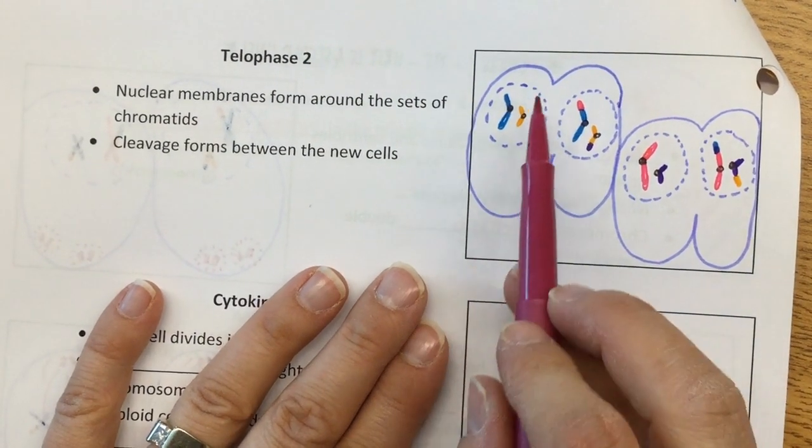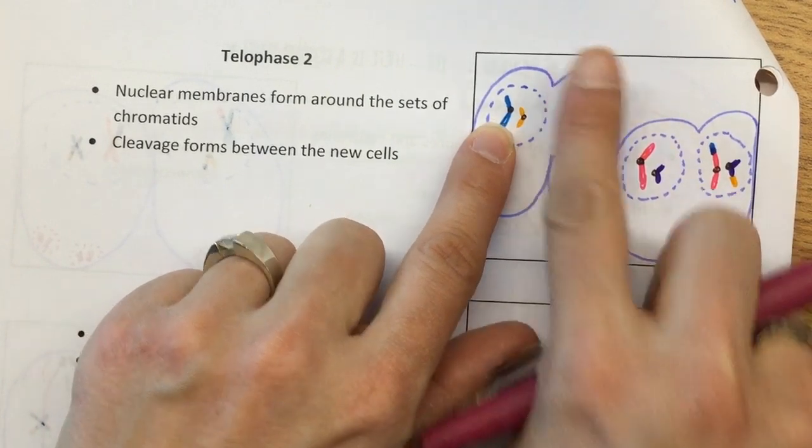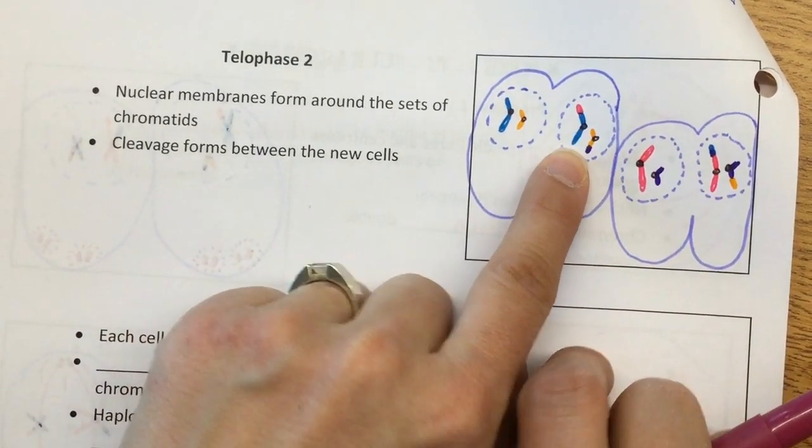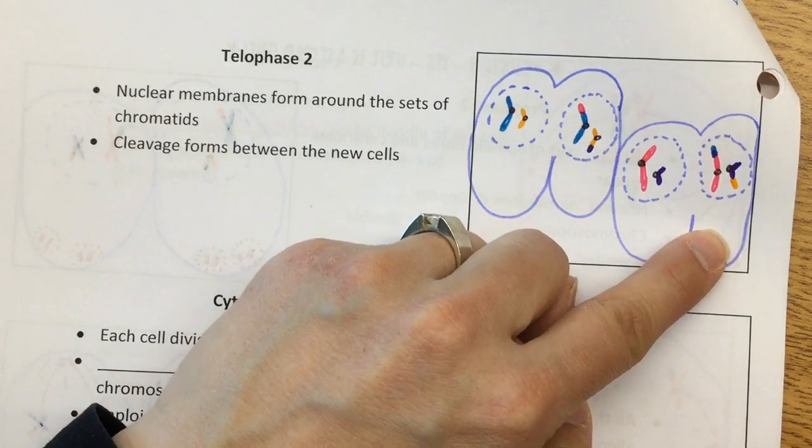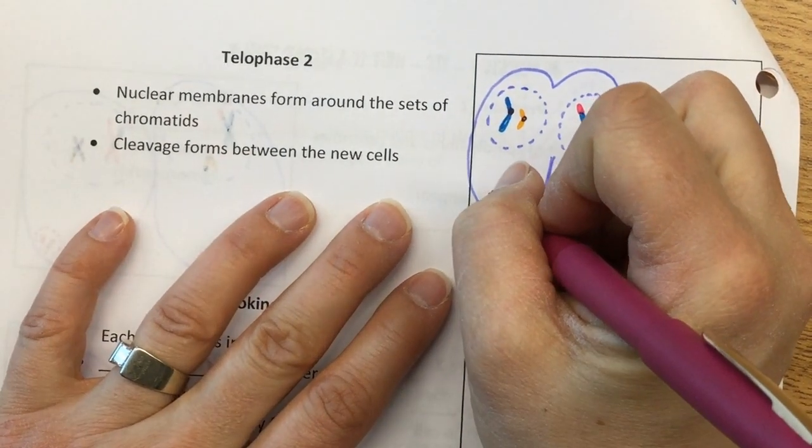So notice now this new cell that's forming is going to have two centromeres. This set has two centromeres, this set has two centromeres, and this set has two centromeres. That's exactly what we're looking for, okay?